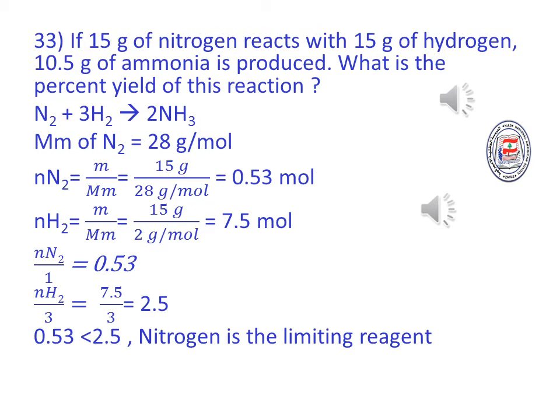Then find the number of moles of hydrogen, which equals mass divided by molar mass, equal 15 grams divided by 2, equals 7.5 moles. Then identify the limiting reagent: moles of nitrogen divided by coefficient 1 equals 0.53, while moles of hydrogen divided by coefficient 3 equals 7.5 divided by 3, equals 2.5. Since 0.53 is less than 2.5, nitrogen is the limiting reagent.